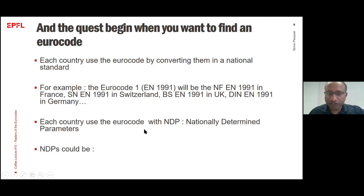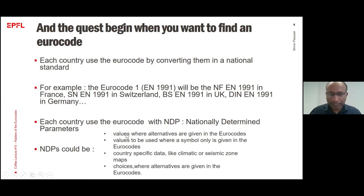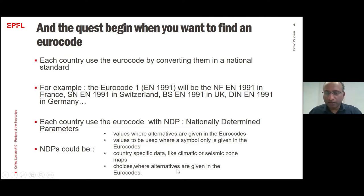The contents will be the same, but each country is allowed to apply what we call NDP — Nationally Determined Parameters. To make it easy to understand: suppose the Eurocode says all walls should be painted in blue. The NDP would allow you to choose between light blue or dark blue. You are still following the frame of the Eurocode, but can choose locally some specific parameters. In practice, NDP can be values where alternatives are given in the Eurocode, values where a symbol is used and you can choose, country-specific data like climatic or seismic zone maps, or choices when several options are available in the Eurocode.